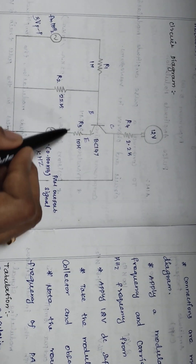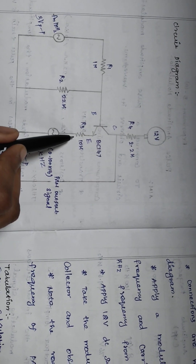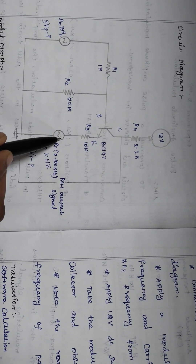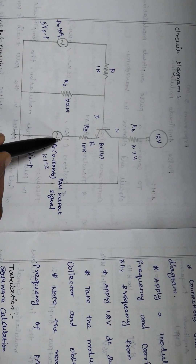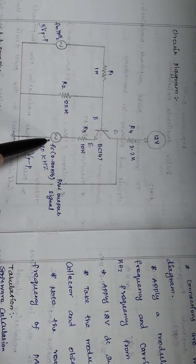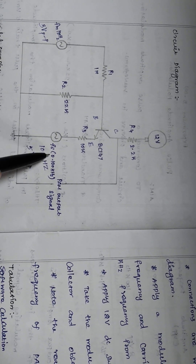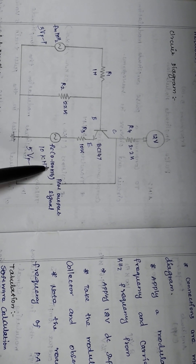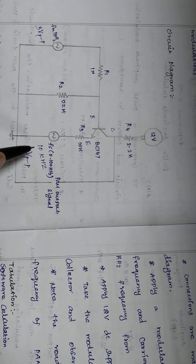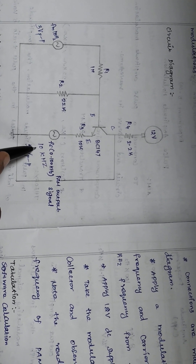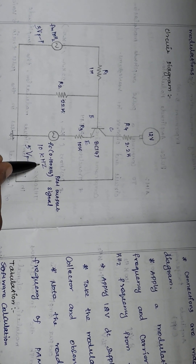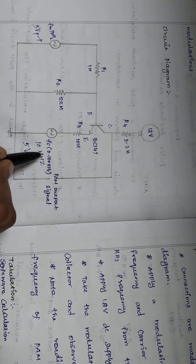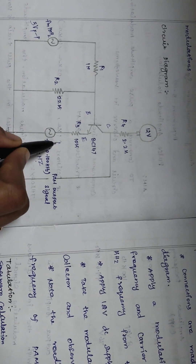From the emitter terminal, we are connecting a 10 kilo ohms resistor and the sampling frequency, or the carrier frequency, is a high frequency signal lying in the range between 0 to 100 kilohertz. We can set around 10 kilohertz for the carrier signal, which is a pulse.